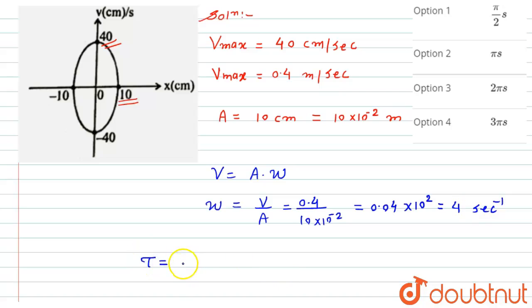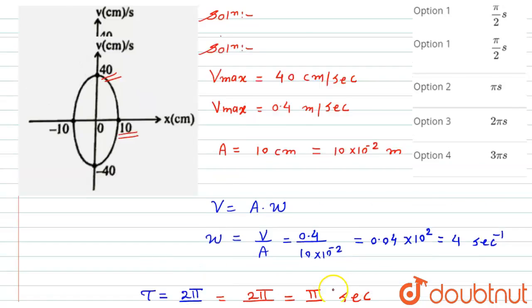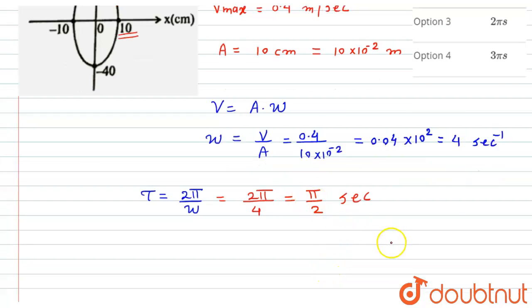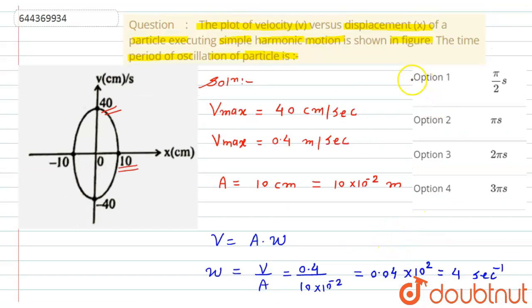Now we know that the time period for the particle is given by T is equals to 2 pi by omega. If we substitute the value of omega here, we get 2 pi divided by 4. This would become equal to pi by 2 second. So the required time period of oscillation for the particle will be pi by 2 second. According to given option, option first will become correct answer for this question.